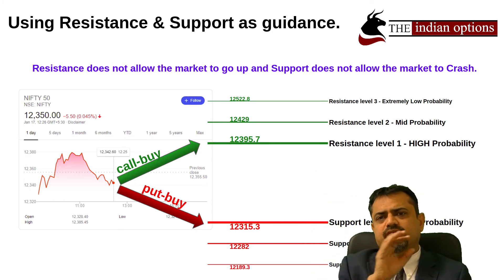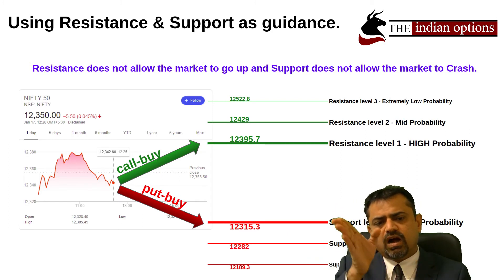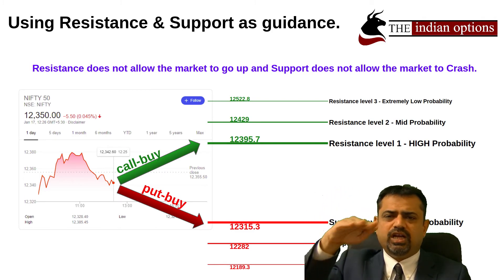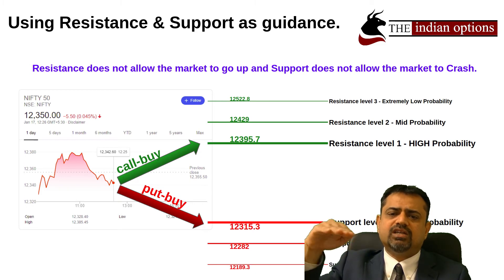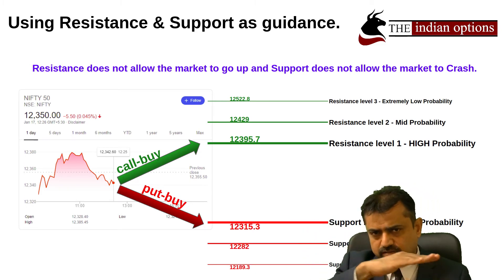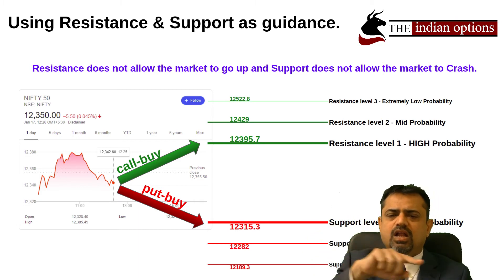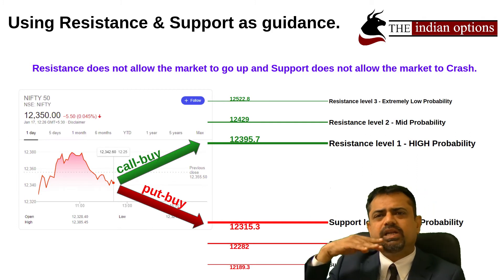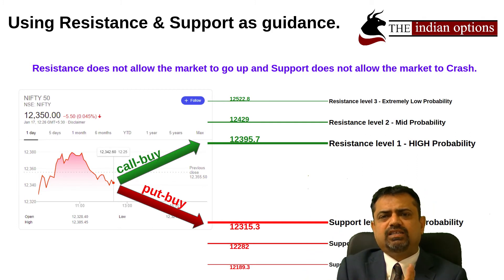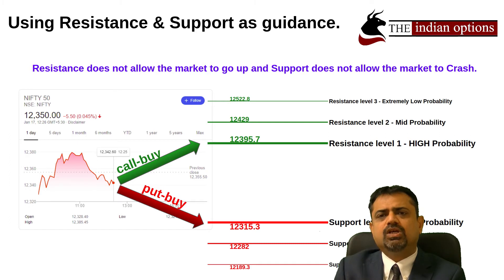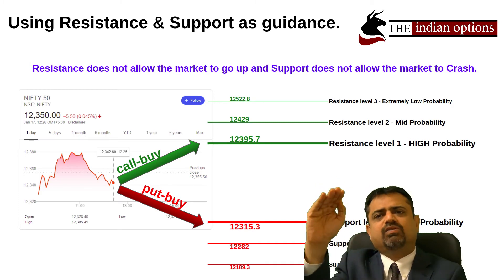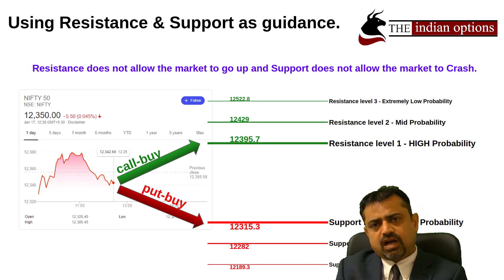A lot of traders will open a contract assuming that if the market is going up, the maximum it might go is 12,395. So they will choose a strike of 12,400. As soon as the market tries to go till 12,395 or so, they know the resistance has been hit and there is very little chance the market will go further up, so they will close the trade — thinking they have got the maximum out of today's contract.